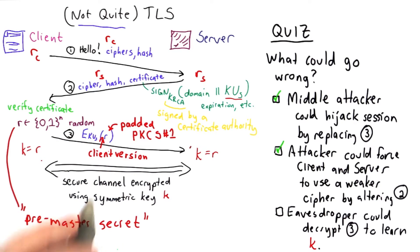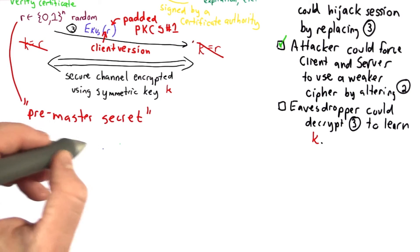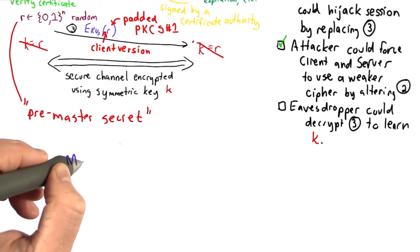So now, instead of making the key just r, the key is going to combine all of the randomness that we've used so far. So the way we'll compute the key, which is now called the master secret, is by using a pseudo-random function.